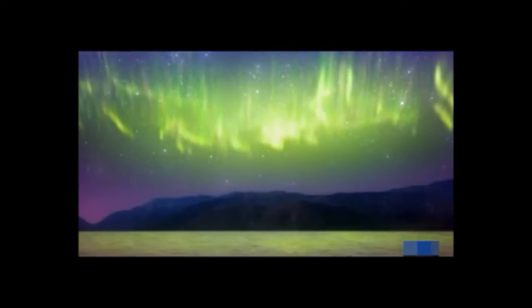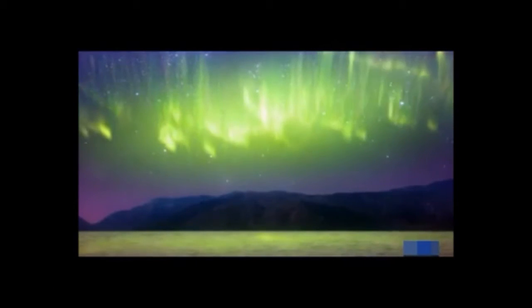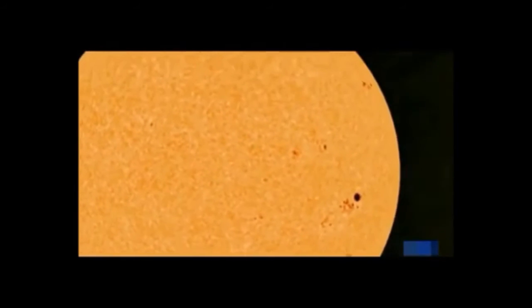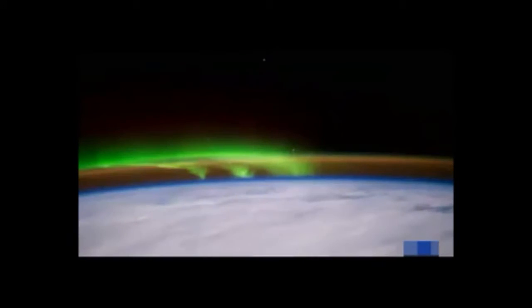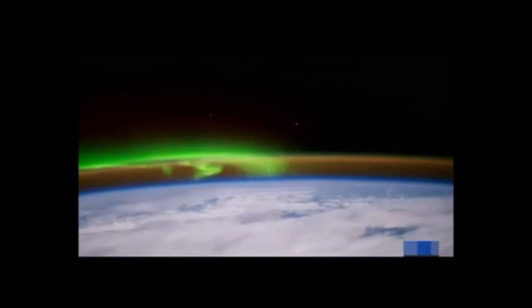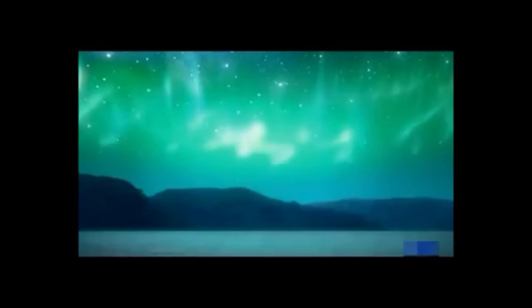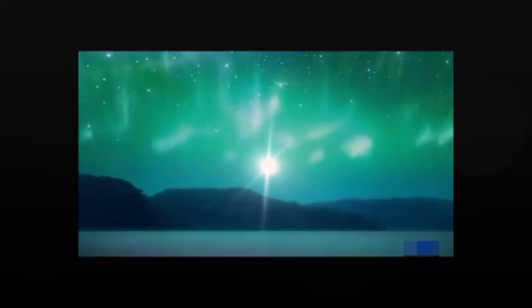It's long been known that the auroras are associated with the solar wind. The solar wind is the constant flow of charged particles coming from the sun and blowing toward the earth. Scientists had a problem. It turns out that if you calculate the energy stored in the solar wind, you find that it's not large enough to generate the spectacular light show called the aurora borealis. There had to be another source of energy driving the auroras.